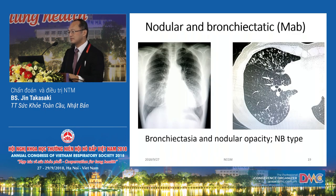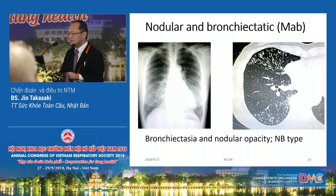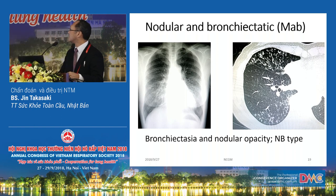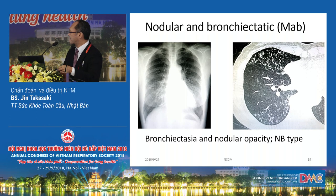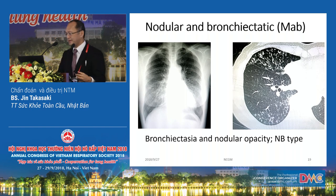Next is the nodular and bronchiectasis pattern. This is a patient with mycobacterium abscessus — bronchiectasis and nodular opacity. In the middle lobe you can see multiple bronchiectasis, and this is a typical centrilobular nodular pattern. These are typical NTM or chronic airway infection patterns.